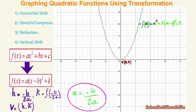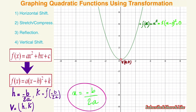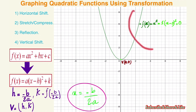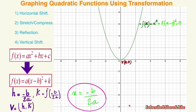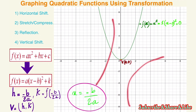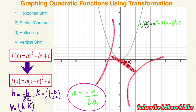However, odd functions have a point of symmetry at the center of the graph, rather than an axis of symmetry.